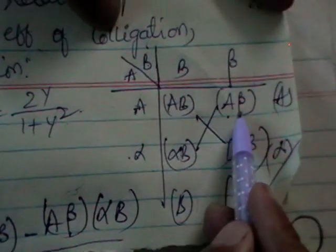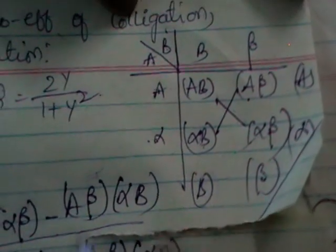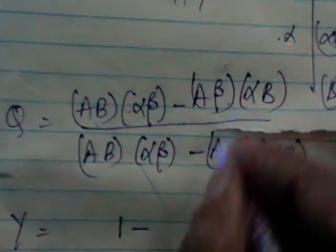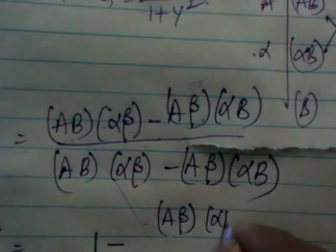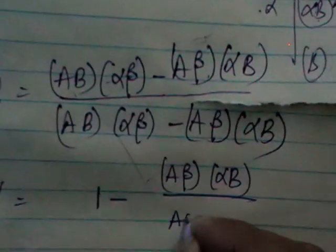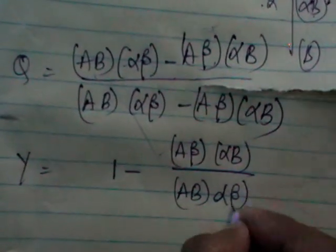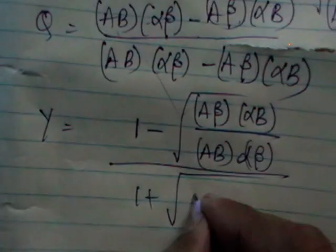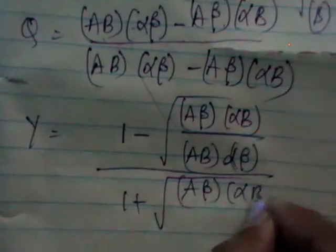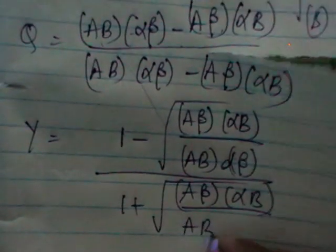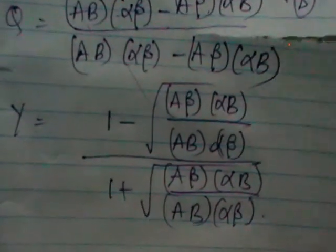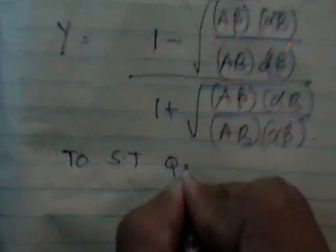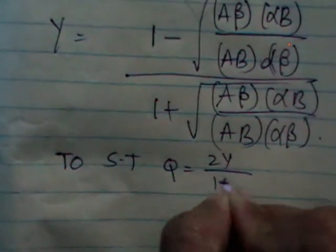A, B, alpha, beta minus A, beta, alpha, B by the same term with plus. Now, you need to show that Q is equal to 2Y by 1 plus Y square.